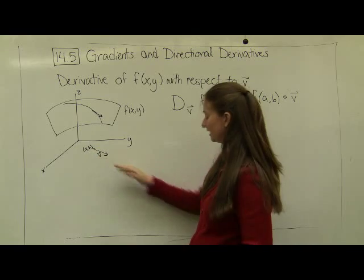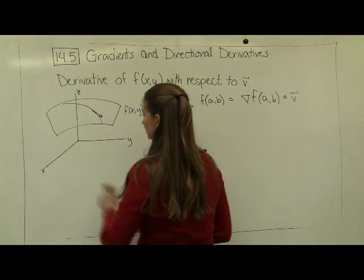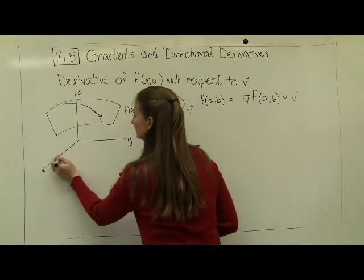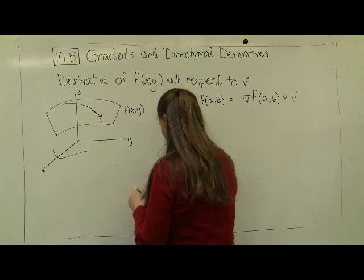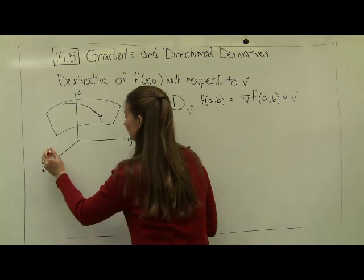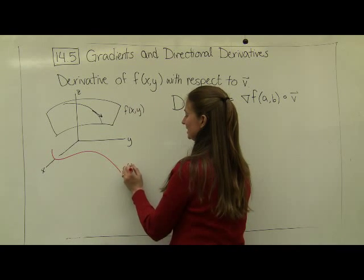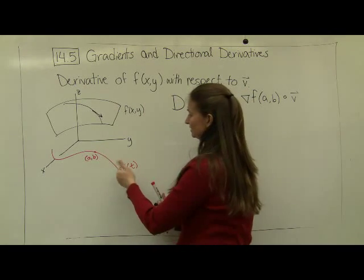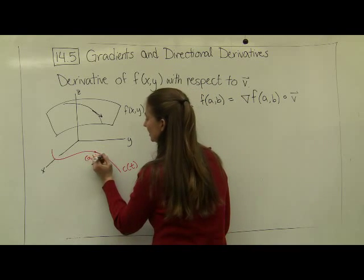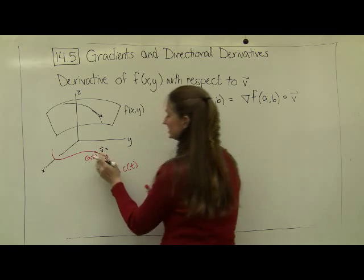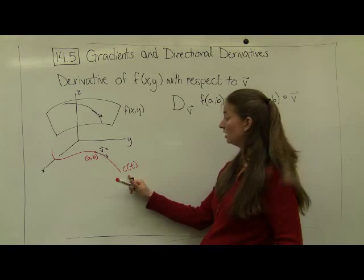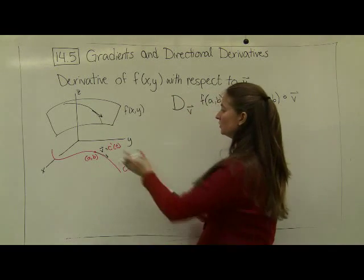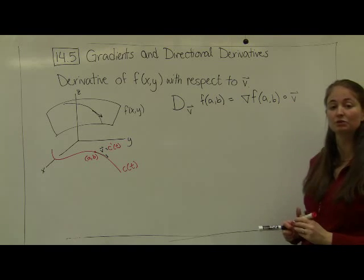If instead of thinking of v as just a vector, suppose that we think of a path down here, just like we talked about before. Maybe I should use red, because that's the color that we used before. Color is important sometimes. Ah! That's not red! Oh no! Tragedy! Wait a second. Here we go. So let's say that this is our path, c of t, down in the xy plane. And I want to know what's going on right at the point a, b. Well, if I'm traveling along c of t, what is the vector? My vector v that I was talking about, v, is exactly equal to the tangent vector of this path. And the tangent vector, if you recall, is given by the derivative of my path curve, c prime of t.